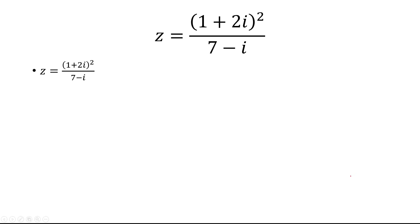Let's first expand the numerator. So 1 plus 2i quantity squared is 1 plus 4i plus 4i squared.